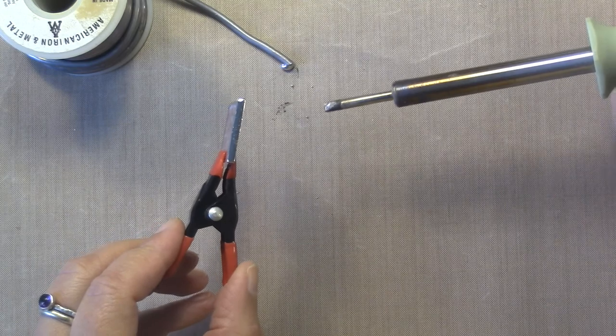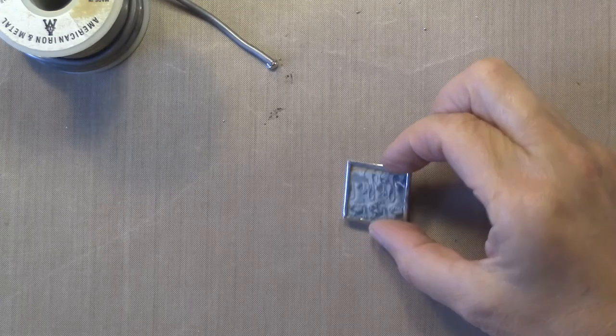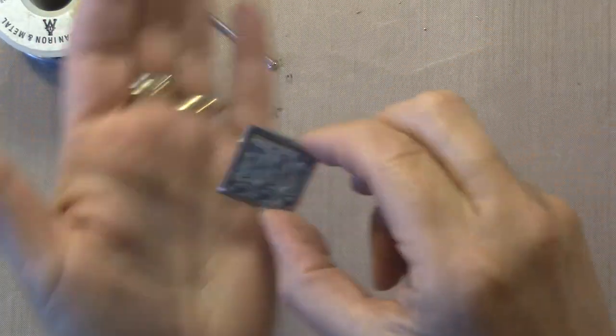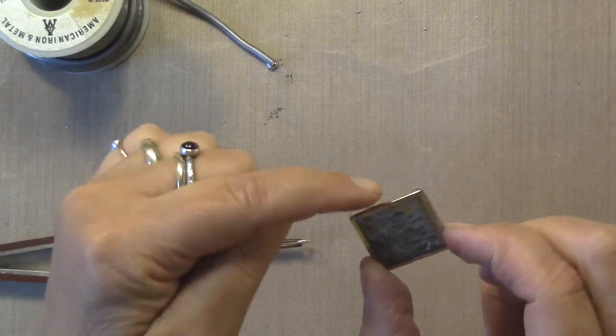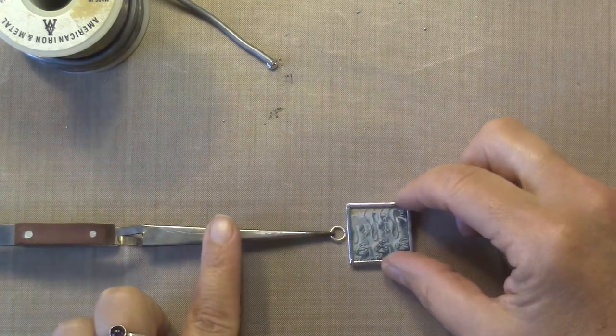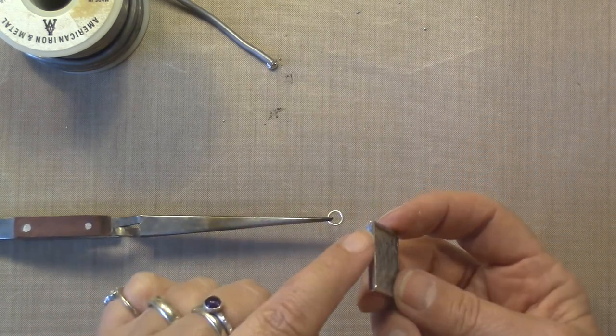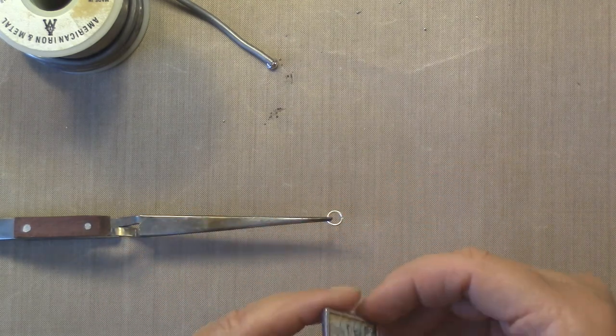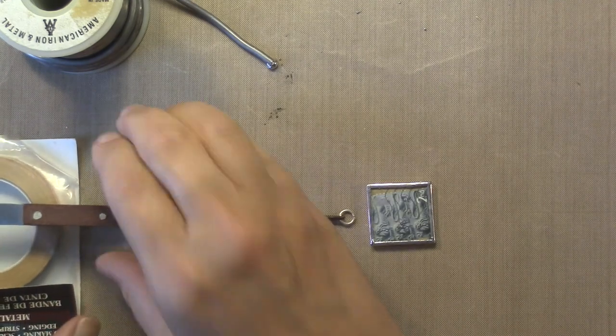See how easy that is? Now we are ready. This is all soldered and it looks good. I'm real happy with it. Now we are about to apply the jump ring to the pendant and I'm going to put it right in the center of the ledge.